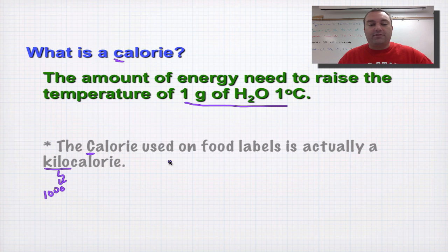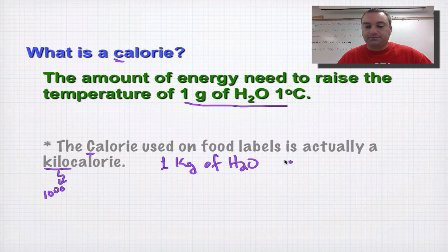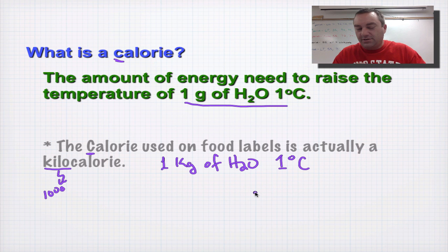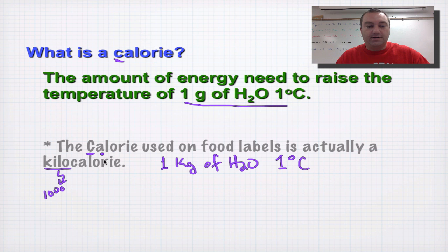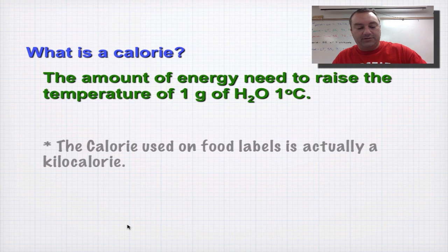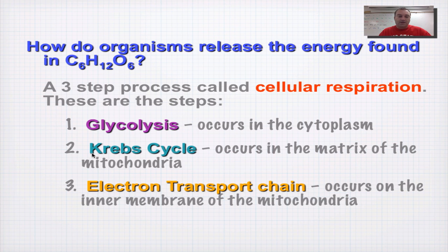The big-C calorie refers to the fact that it's a kilocalorie, and kilo is a prefix that means 1000. So this is actually 1000 of the little calories — it's the amount of energy it takes to raise one kilogram of water one degree Celsius. The calorie found in food is the big-C calorie.